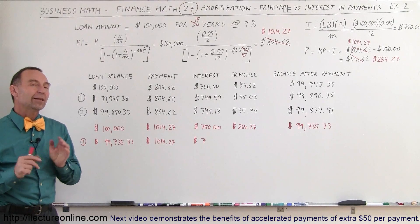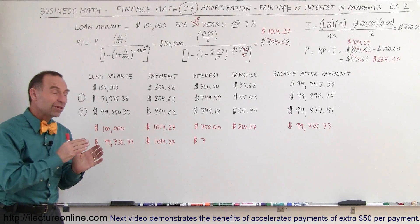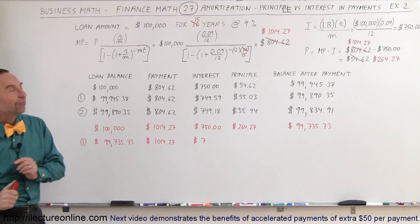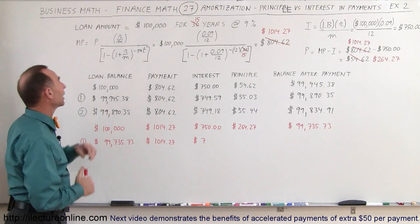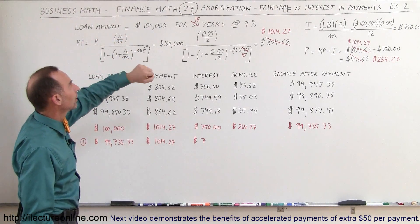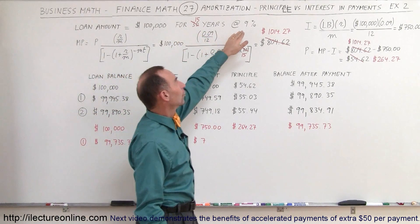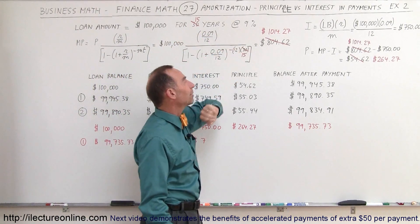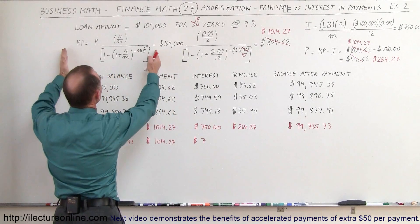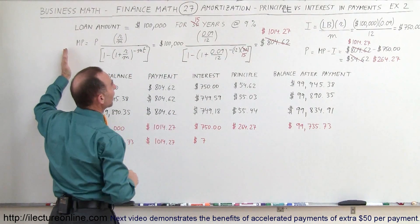Welcome to ElectronLine. Let's take a look at what we did in the previous video, but instead of having a 30-year loan, we're going to have a 15-year loan. Again, we're borrowing $100,000 — it's only for 15 years instead of 30 years. The rate still is at 9%, and notice we use the same equation to calculate the monthly payment.